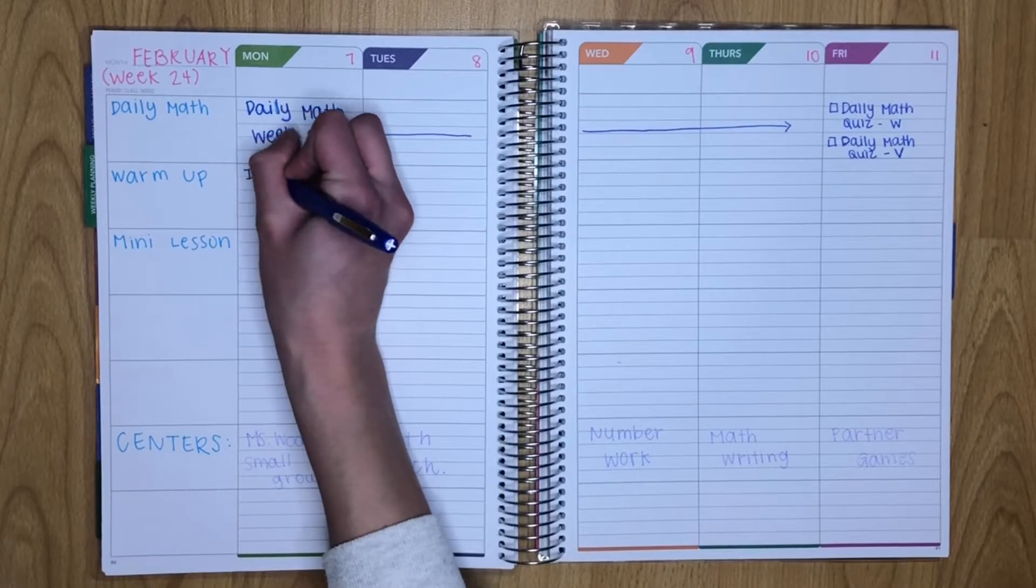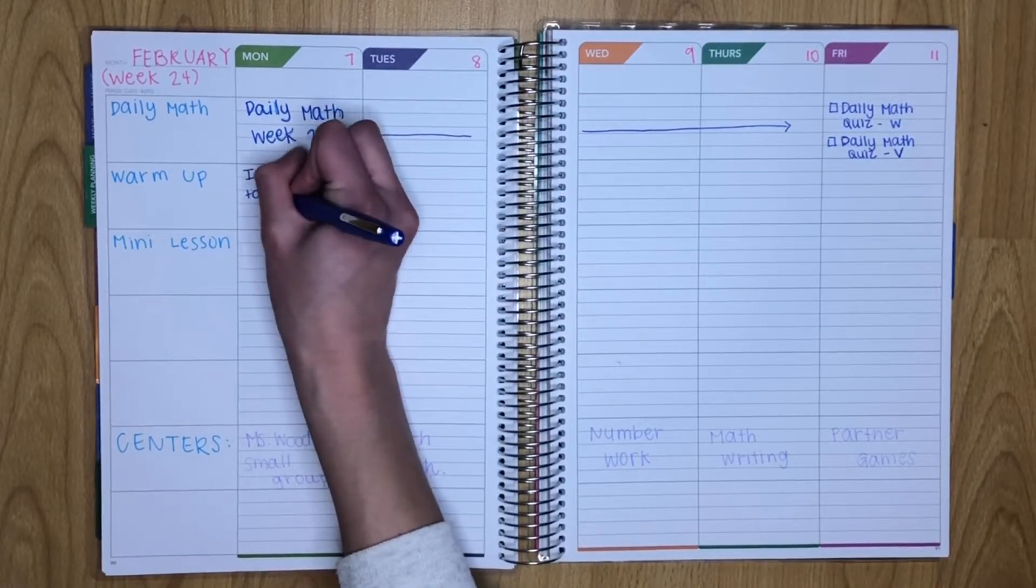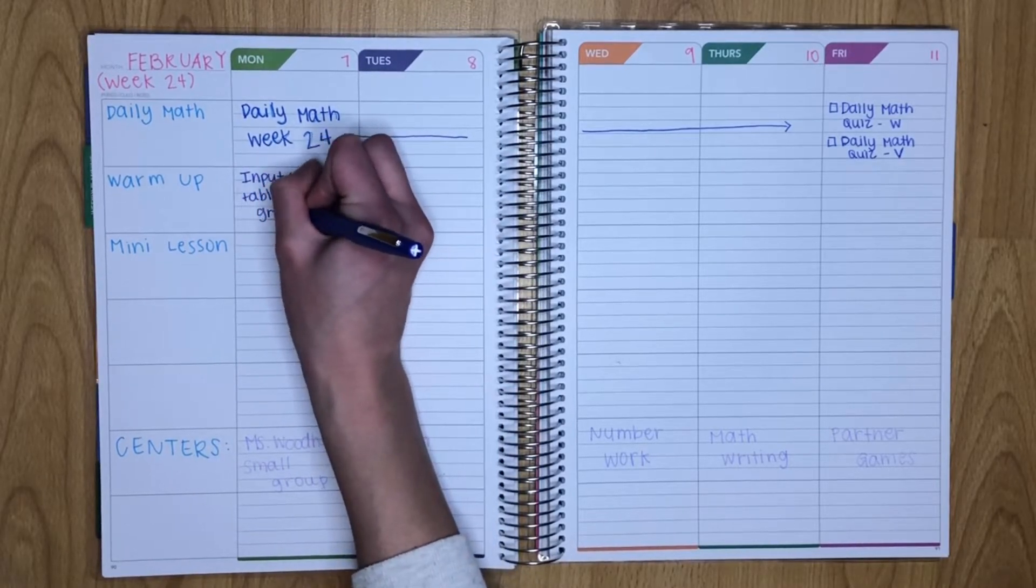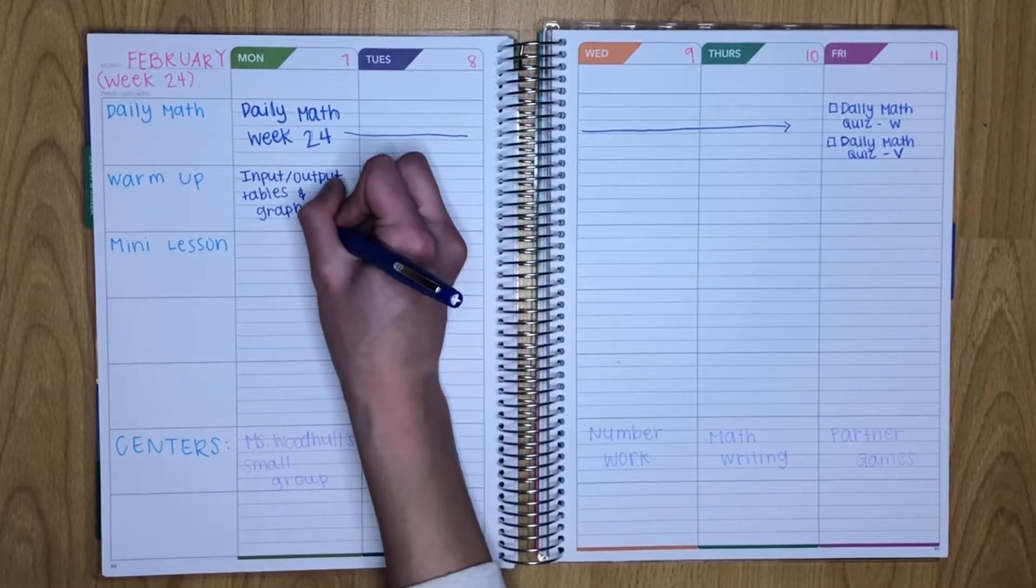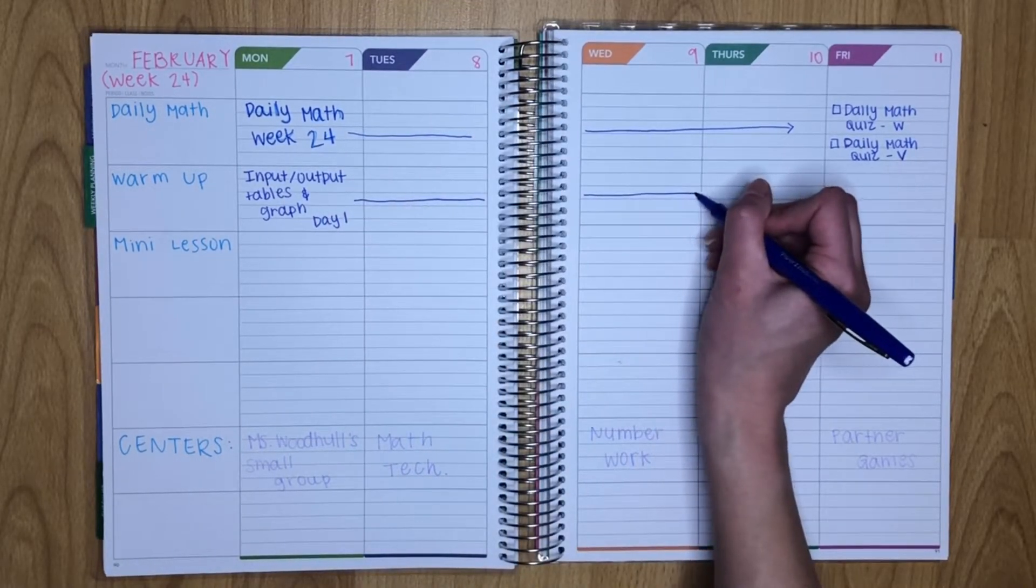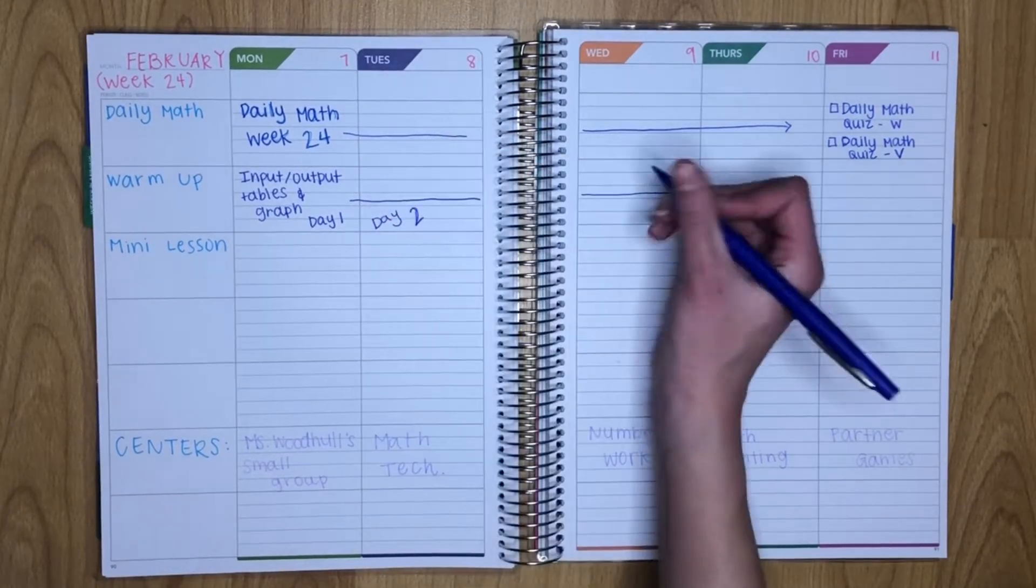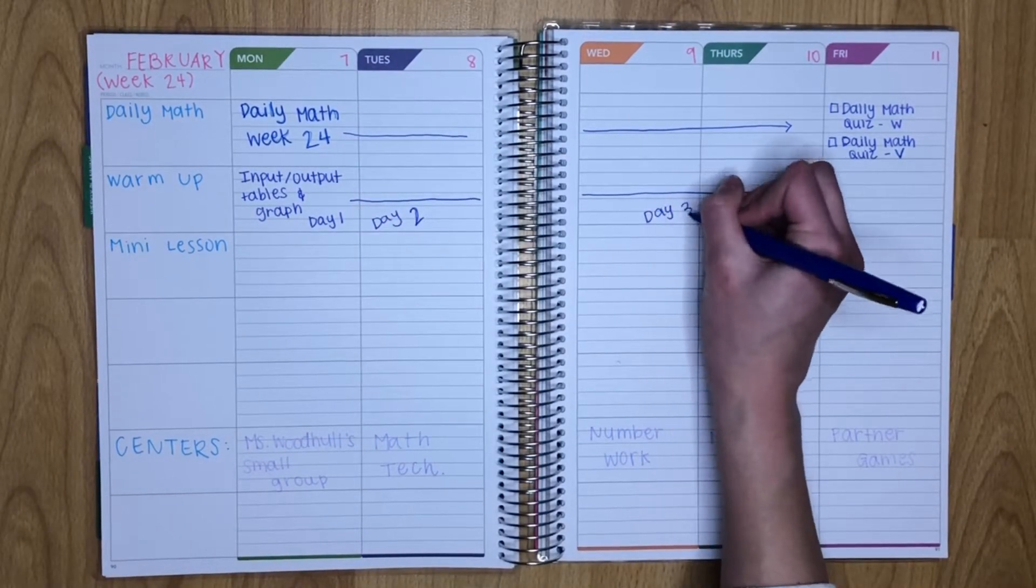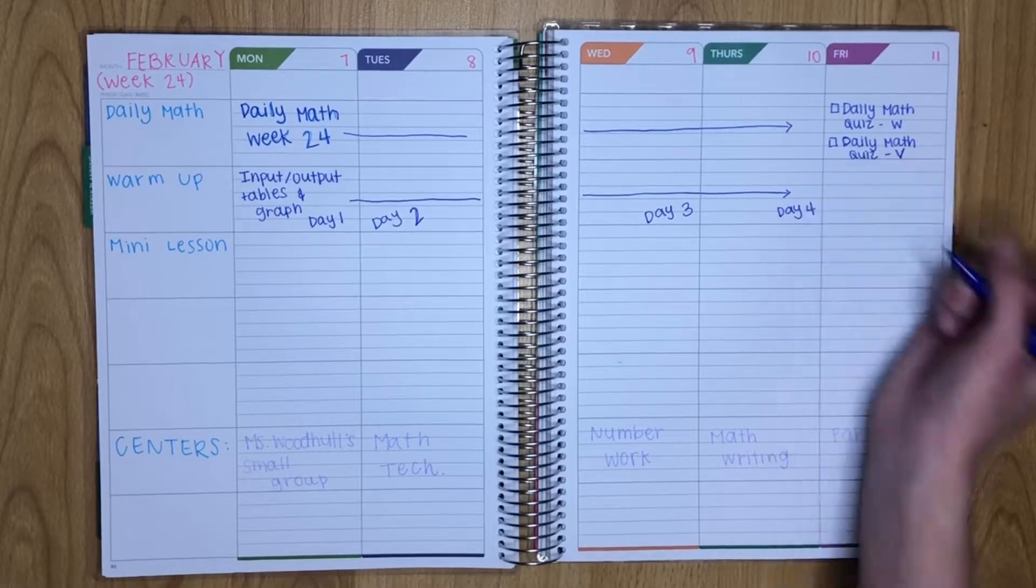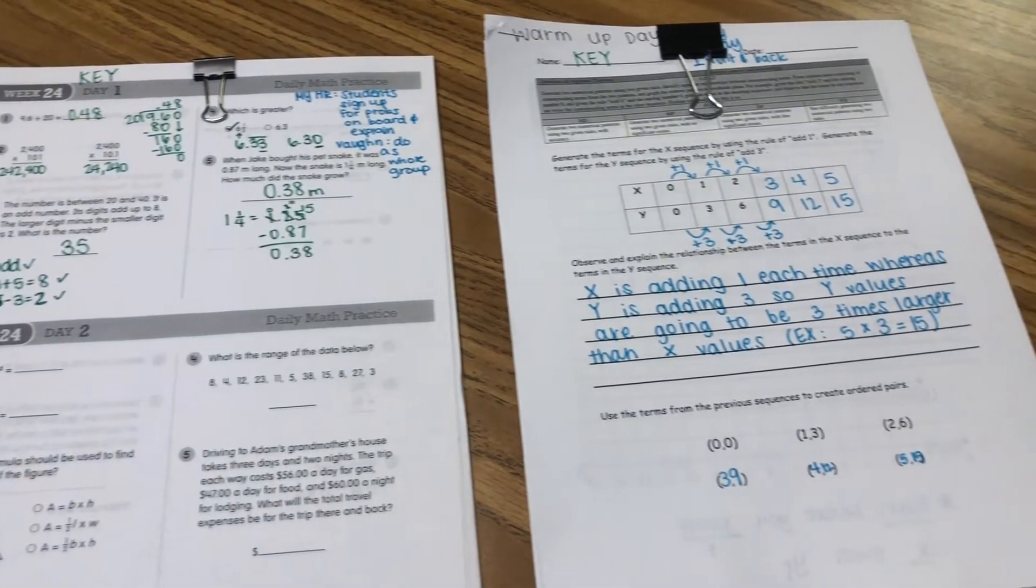After daily math, we usually go into a warm-up problem. So for this week, we are doing input and output tables along with coordinate graphs. So we will have a different graph and input-output table for each day of the week, Monday through Thursday. And this is a little insight into what that looks like, daily math and warm-up.